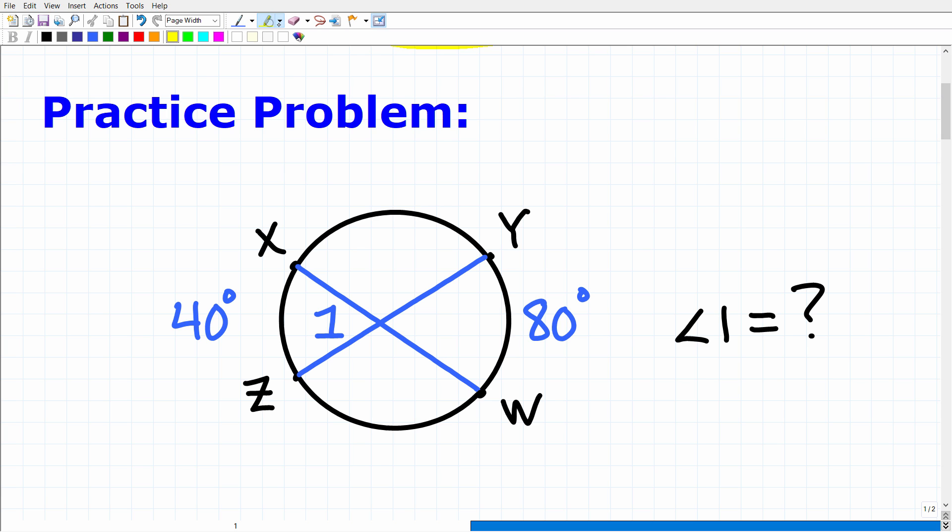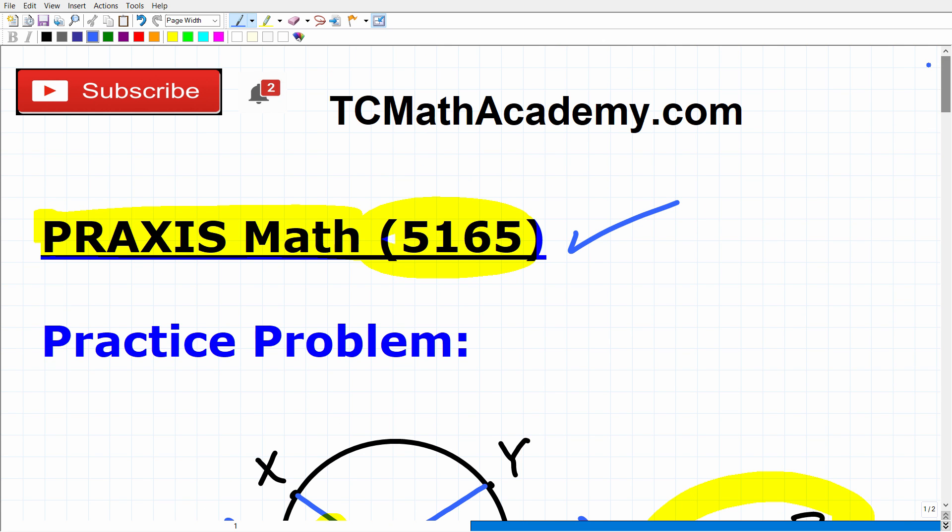And here is the problem. So we have a circle and we have some chords in that circle, and what we're looking for here is angle 1. If you can figure this out, go ahead and put your answer into the comments section. I'll show you the correct answer in just one second, and then, of course, we'll walk through the solution step by step.